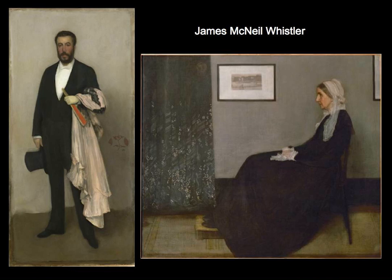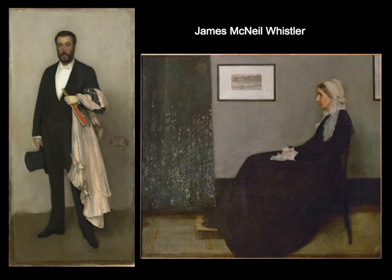Here are some examples of achromatic color schemes by James McNeil Whistler. It is art and painting, so a color scheme is not a very strict rule. You can see both of these images have some shades of pinks or oranges or blues or greens in them, but they are largely grayscale. Because of that, certain things stand out — like the red fan that the man is holding — which becomes a focal point of the image because of the color contrast.